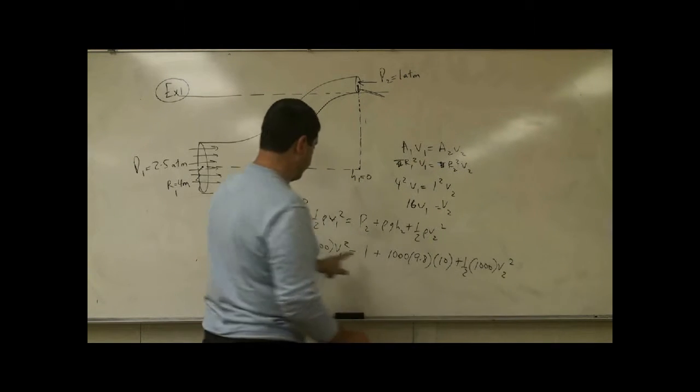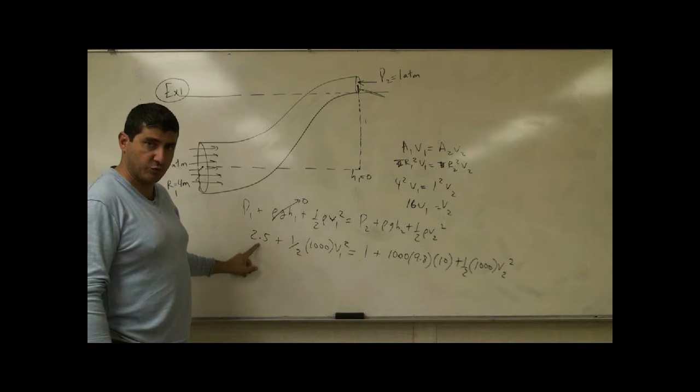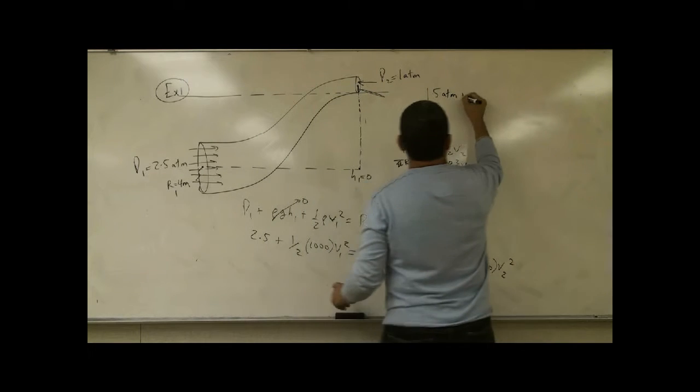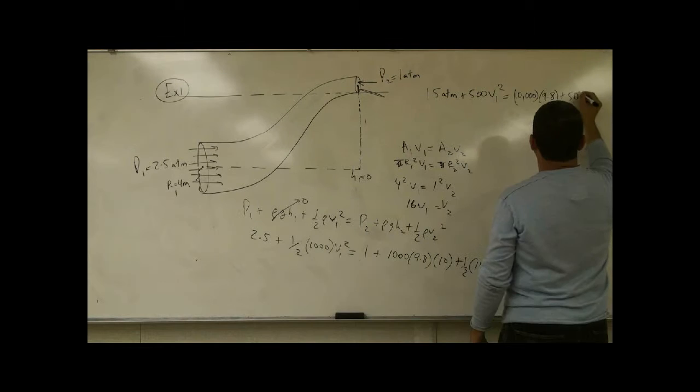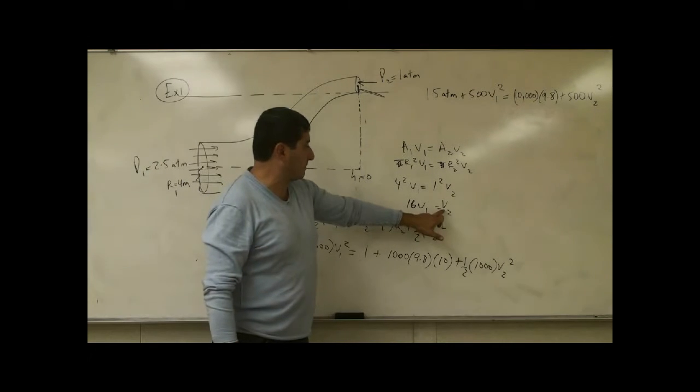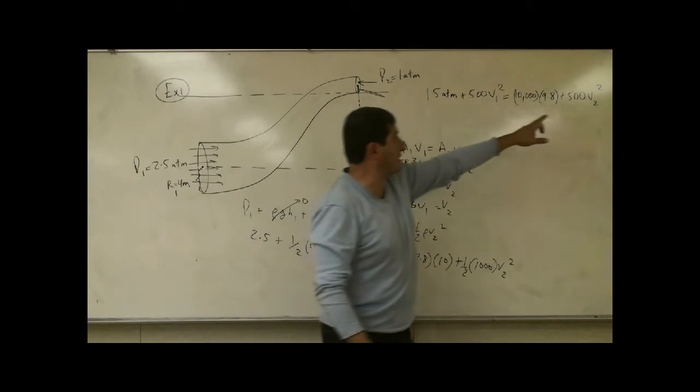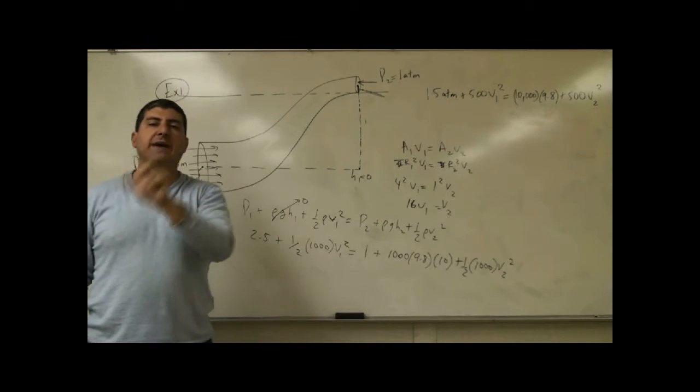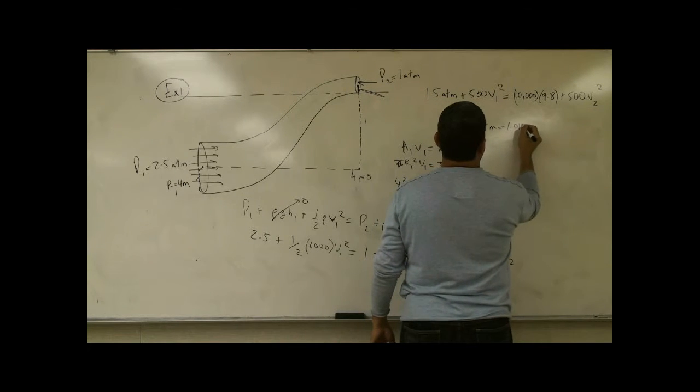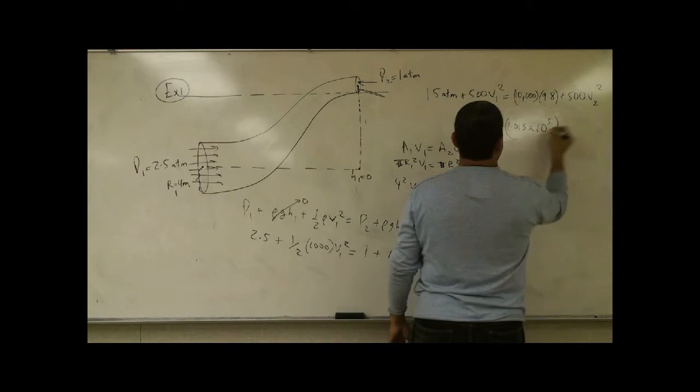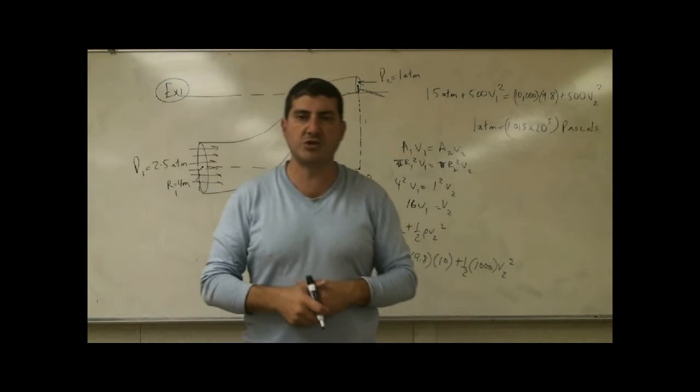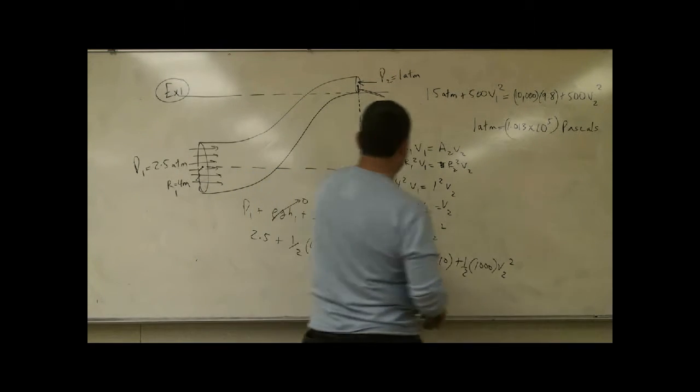Okay, so we have here 2 and a half, 1 atmosphere. 1 goes over there, subtract, you get 1 and a half atmospheres, plus 500 V1 squared, V2 squared. So now we could put this relationship, V2 must equal to 16 V1. We could put that over there. The other thing we need to do is convert from atmospheres to Pascals. We know that 1 atmosphere is equal to 1.013 times 10 to the fifth Pascals and Pascals is Newton per meter squared. So that it's an SI unit of pressure. So we combine everything.